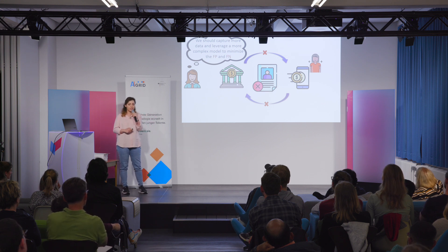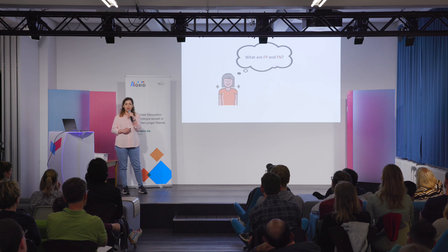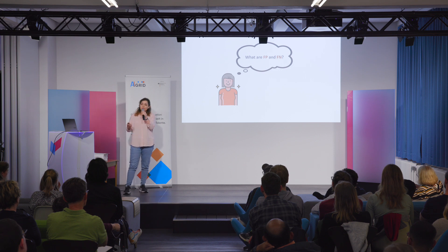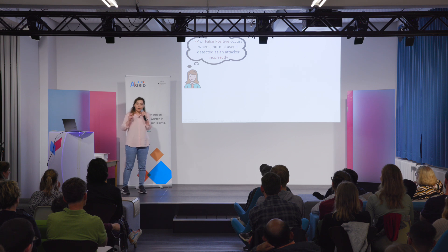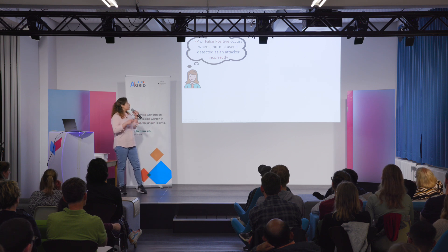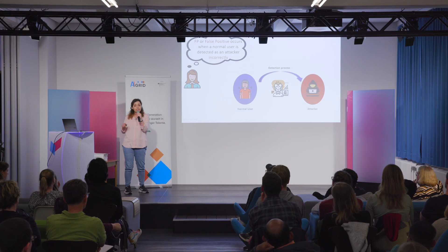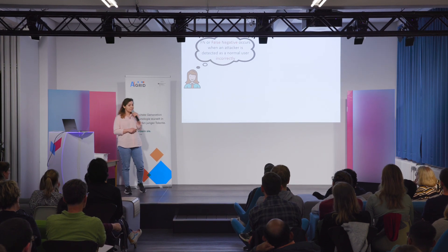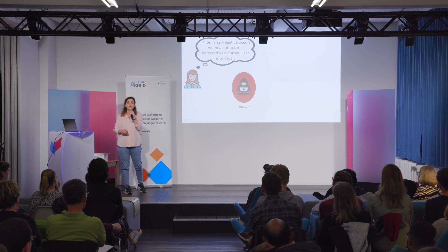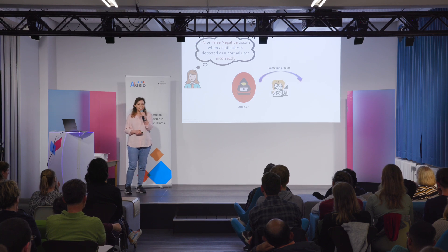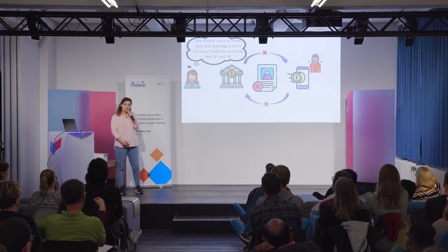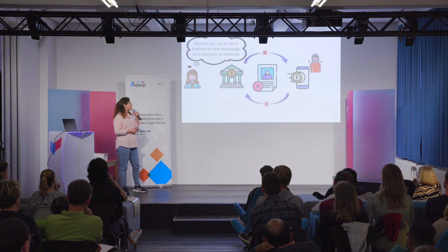Our IT manager needs to minimize false positives and false negatives. When using AI, a false positive refers to the event where you have a normal user but your AI detector incorrectly identifies them as an attack. A false negative happens when you have an actual attack and your AI detector incorrectly identifies it as a normal user. To improve performance, there are different methods such as capturing more data, having a more complex model, or using a hybrid model combining AI and non-AI approaches.